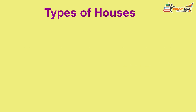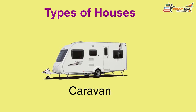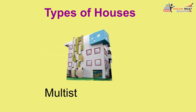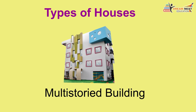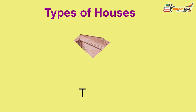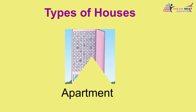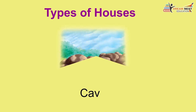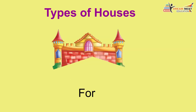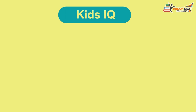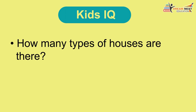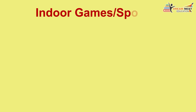Types of houses: house boat, multi-storey building, hut, tent, apartments, cave, igloo, fort. Kids IQ: How many types of houses are there? Have you ever seen a house boat?